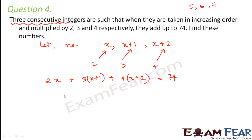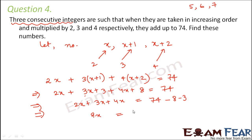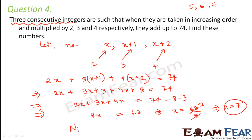From this: 2x plus 3x plus 3 plus 4x plus 8 equals 74. Bringing variables together: 2x plus 3x plus 4x equals 74 minus 8 minus 3, so 9x equals 63, giving x equals 7. Therefore, the three consecutive numbers are 7, 8 and 9.